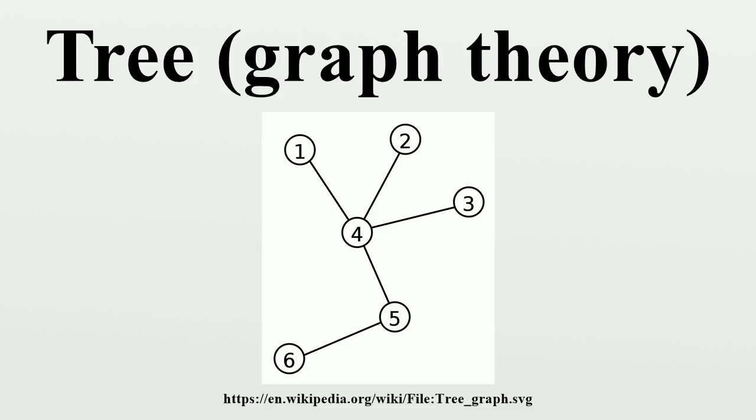Example: The example tree shown above has 6 vertices and 6 minus 1 equals 5 edges. The unique simple path connecting the vertices 2 and 6 is 2, 4, 5, 6.